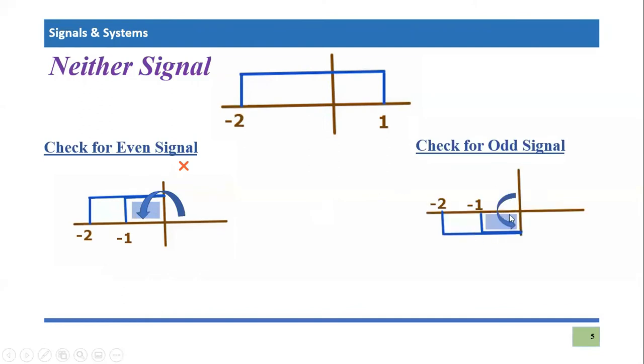So this signal will look like this. And again, we see that this shaded part shows the overlap area and this white part indicates that there is still area which is not completely overlapped. So that means this is also not an odd signal. So this signal, which we have taken as an example, is basically neither even nor odd.